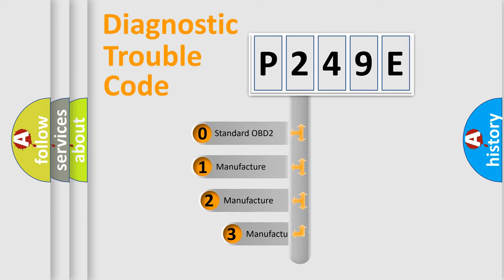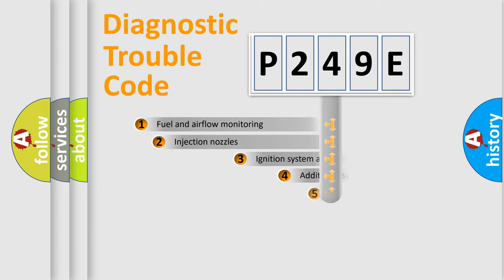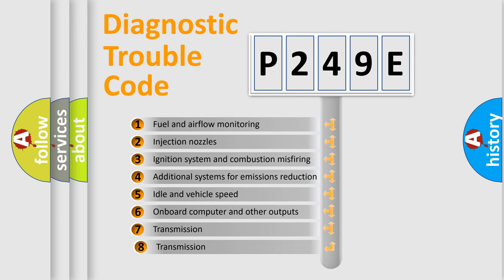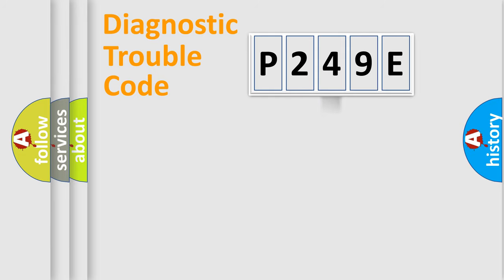If the second character is expressed as zero, it is a standardized error. In the case of numbers 1, 2, 3, it is a more prestigious expression of the car-specific error. The third character specifies a subset of errors. The distribution shown is valid only for the standardized DTC code.